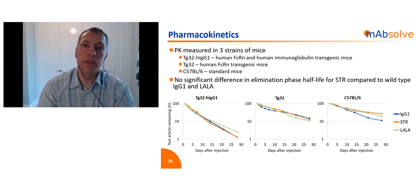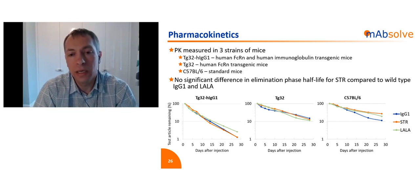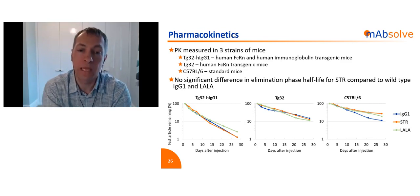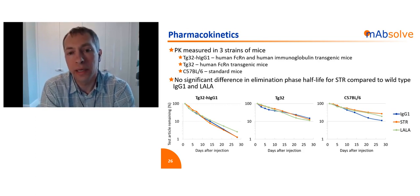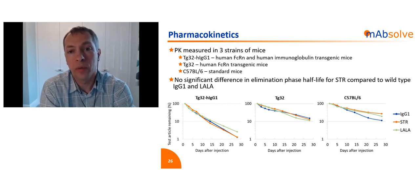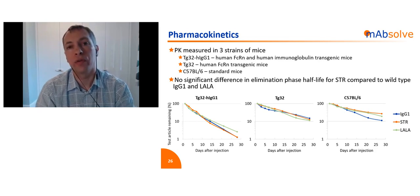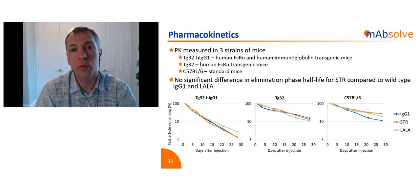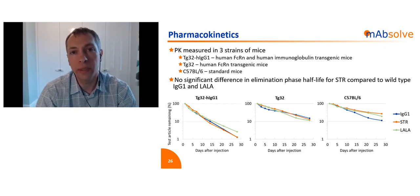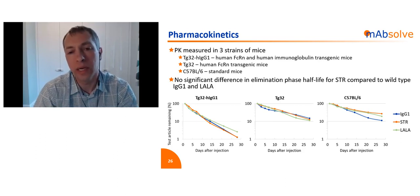Earlier I said we'd looked at in vitro binding of the STR variant to FCRN and seen no difference in affinities, but we also wanted to confirm this with a PK study in vivo. We worked with Jackson Laboratories, selecting two strains of human FCRN transgenic mice and also C57 black 6 mice. Across the board we saw no significant difference in pharmacokinetics for wild-type, STR, or LaLa variants, confirming that we've had no impact on FCRN binding and the resulting PK.